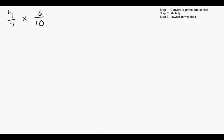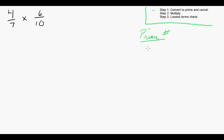Let's take a look at this example. We have 4 over 7 times 6 over 10. Step 1 is to convert all the numbers to prime factors and then cancel. So, what is a prime number? A prime number is a number that is divisible by only 1 and itself.